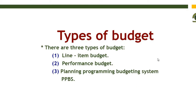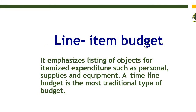Next we will see some types of budget. There are three basic types of budgeting: number one, line item budget; number two, performance budget; number three, planning programming budgeting system, also called PPBS. Number one, line item budget — its name says that we make a list of all the things to be purchased and then plan our money. It emphasizes listing of objects for itemized expenditure such as personnel, supplies, and equipment. A line item budget is the most traditional type of budget.